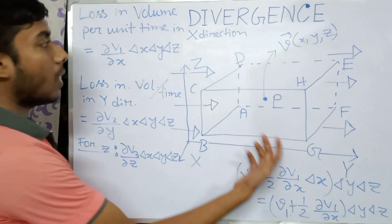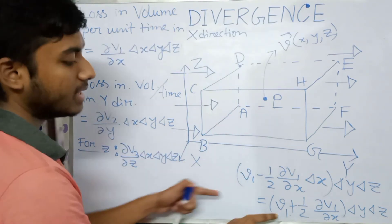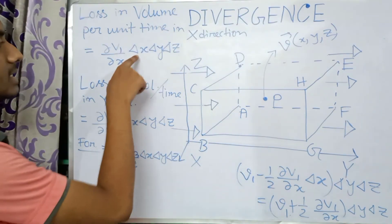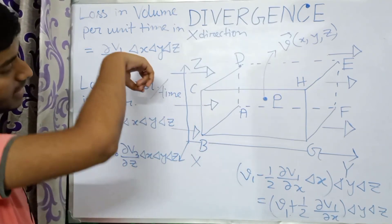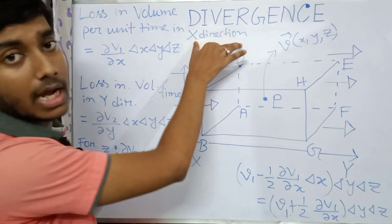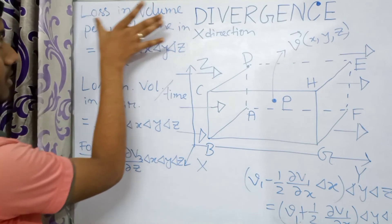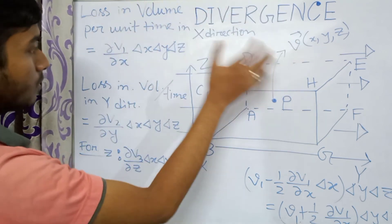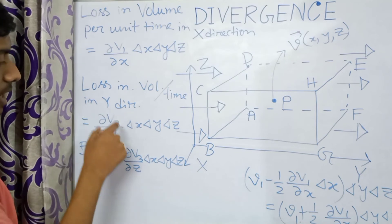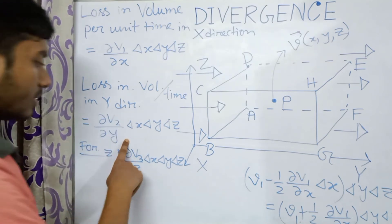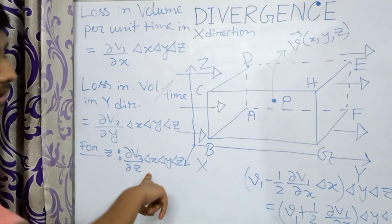The loss in volume per unit time in the x-direction is the expression for face BGHC minus that for face AFED. Calculating this difference gives the result for the x-direction. Similarly, we calculate the same for the y-direction and for the z-direction, yielding analogous expressions.